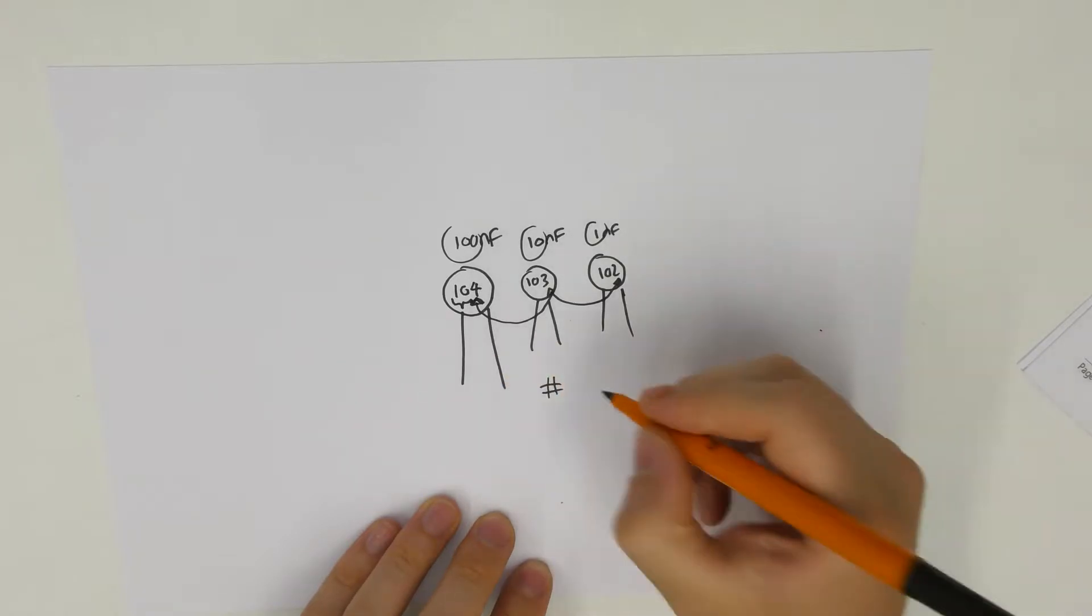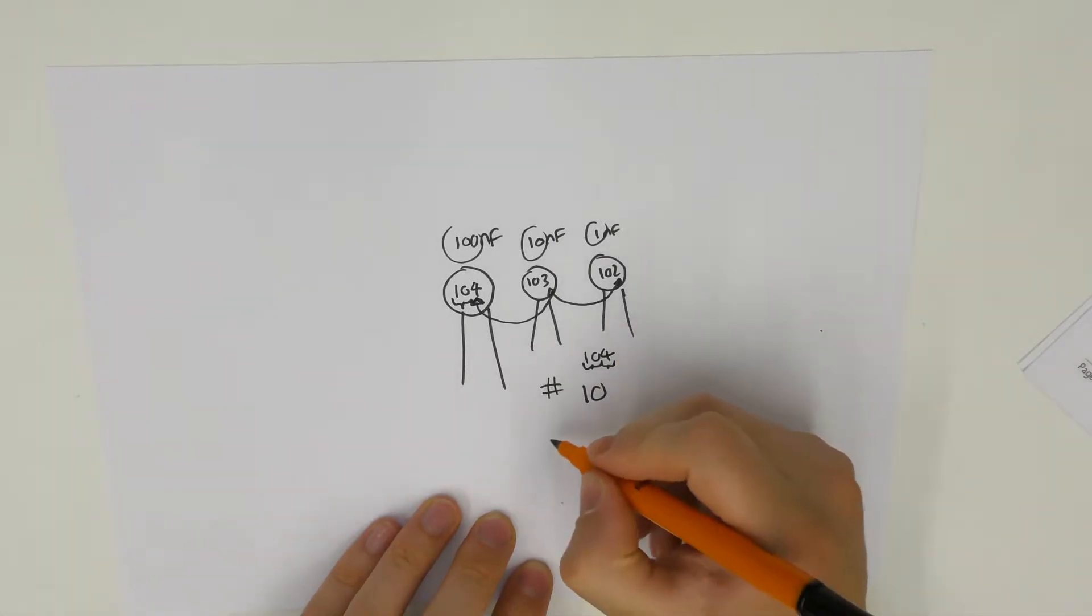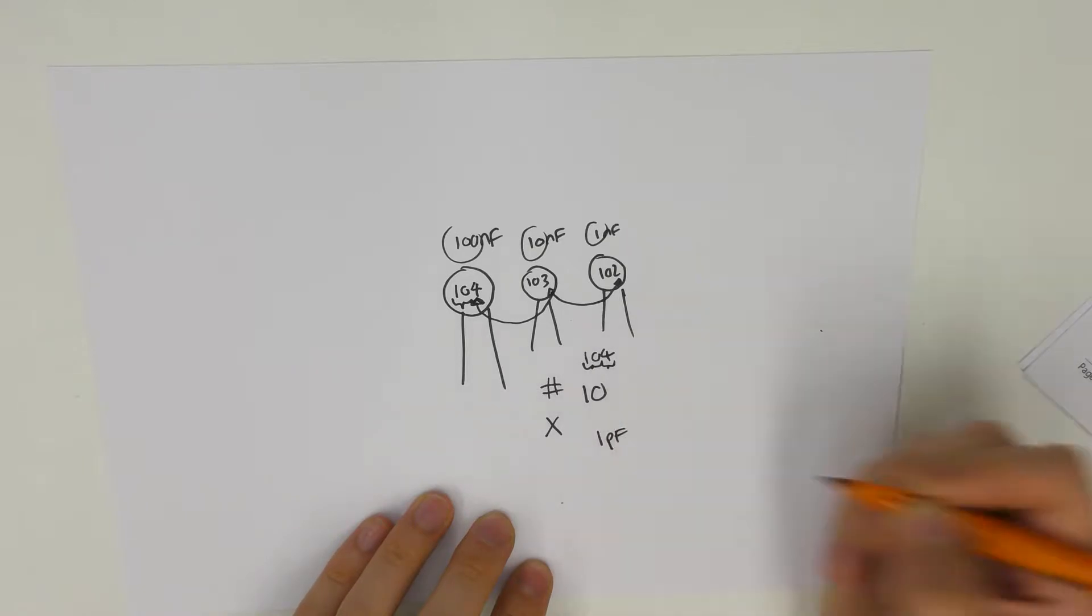Okay. So in the case of 104, it's 10. The third digit is a bit more complicated and is more of a multiplier. But it multiplies from a base value. And the base value is 1 picofarad.